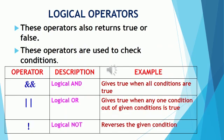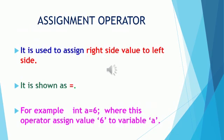Now we will study logical operators. These operators also return an answer of true or false and are used to check given conditions. Java has provided three types of logical operators: logical AND, which gives a true answer when all given conditions are true; logical OR, which gives a true answer when any one condition out of the given conditions is true; and logical NOT, which reverses the answer of a given condition. Then we have the assignment operator, which is used to assign a value to a variable.